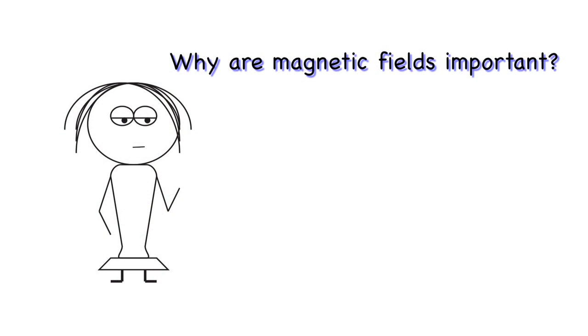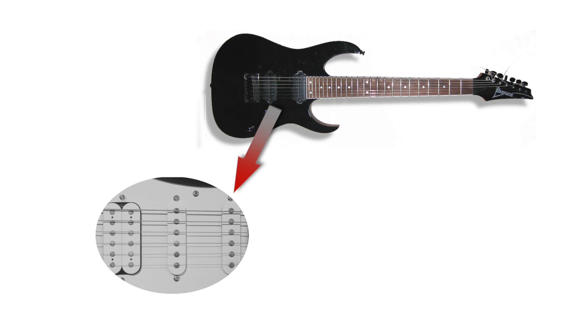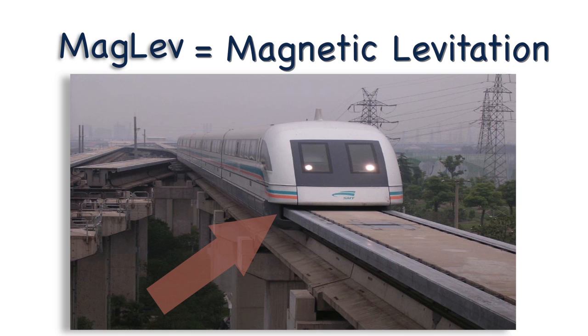Magnetic fields are important because they are everywhere. Engineers and scientists use magnetic properties to develop products and services that we use every day. Magnets are used in things like pickups in an electric guitar. The strip on the back of credit cards is composed of tiny magnetized particles that allow us to store information. There are even high-speed trains that levitate above the rails using electromagnets.